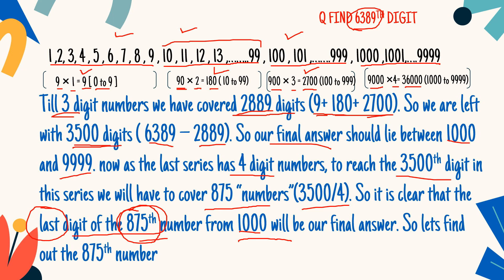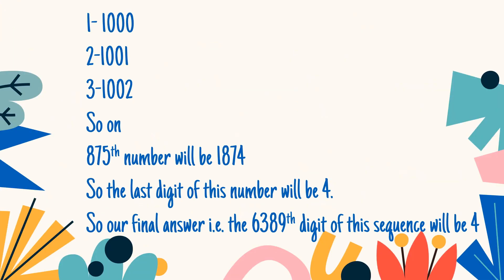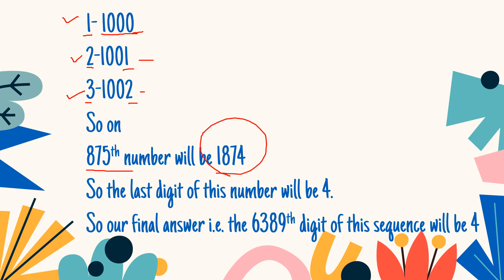Now, how will you calculate the 875th number? See, when I talk about the series from 1000 to 9999, the first number will be 1000, the second number will be 1001, the third number will be 1002. We make out that the first number has 0 as the last digit, the second number has 1 as the last digit, the third number has 2 as the last digit. Therefore, the 875th number will be 1874. So, the last digit of this number is 4. Your final answer — the question was the 6389th digit of this particular sequence — the answer is 4.